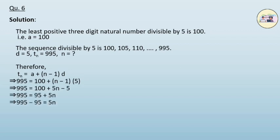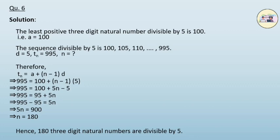After solving, we get 5n is equal to 900. Therefore, our n is 180. Hence, 180 three-digit natural numbers are divisible by 5.